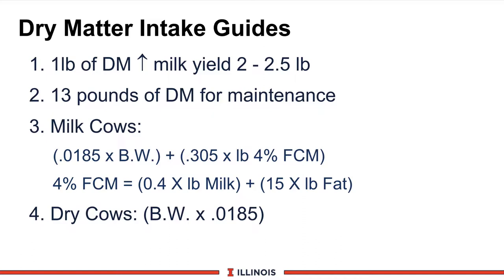Another equation from Cornell is from the old NRC. We calculate dry matter intake based on the body weight of the cow — 1.85% of the cow's body weight — plus the amount of milk production she produces on a 4% fat corrected basis. The second equation listed here is how to calculate 4% fat corrected milk. The two major factors driving dry matter intake for dairy cows will be their body weight size and the amount of milk they are producing.